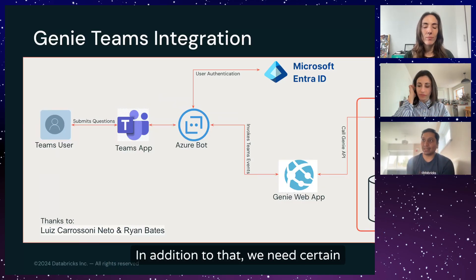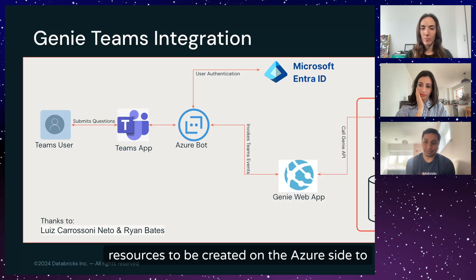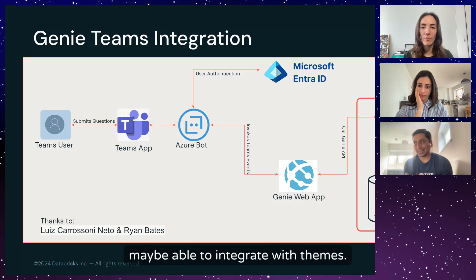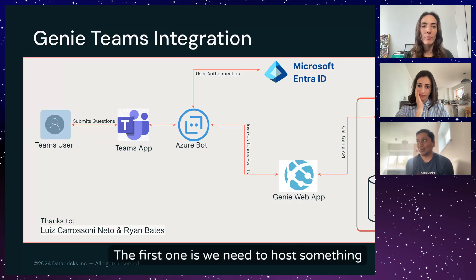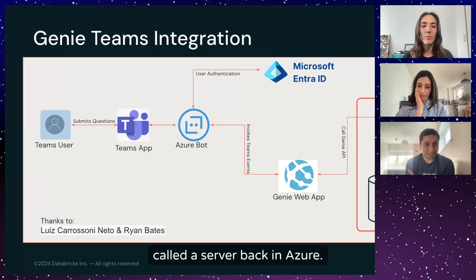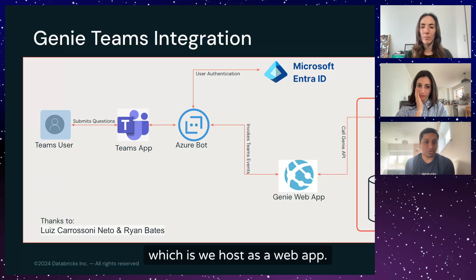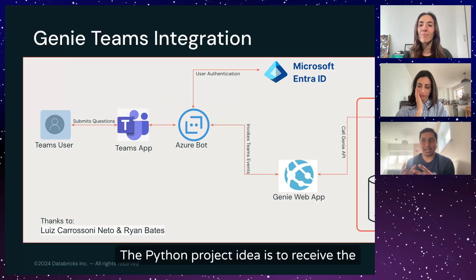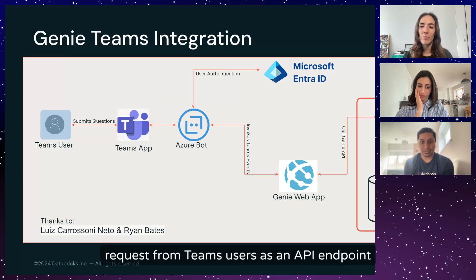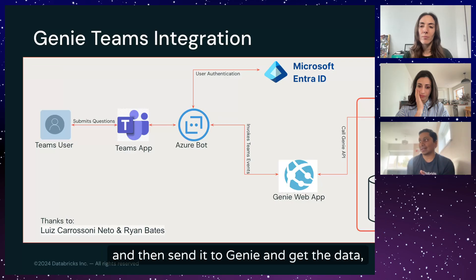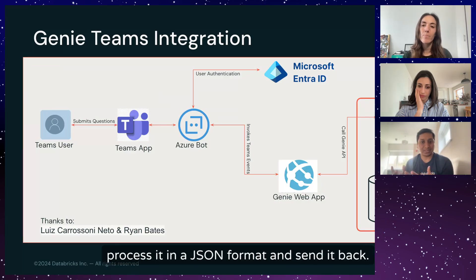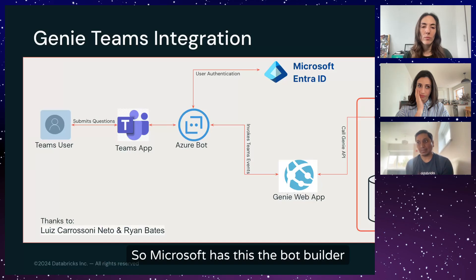In addition to that, we need certain resources to be created on the Azure side to integrate with Teams. The first one is we need to host something called a web app in Azure. You write a Python project which is hosted as a web app. The idea is to receive requests from Teams users as an API endpoint and then send it to Genie and get the data, process it in JSON format and send it back.